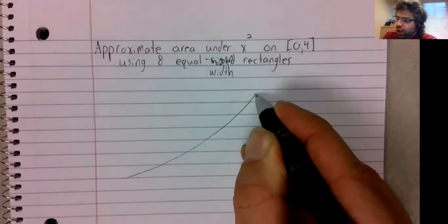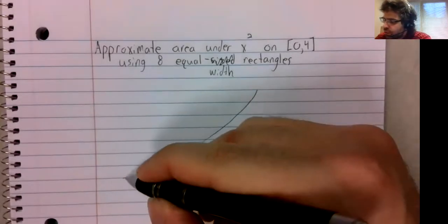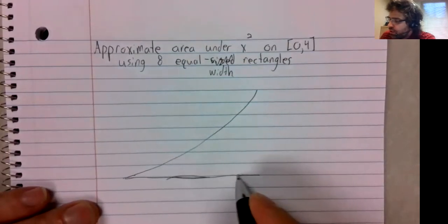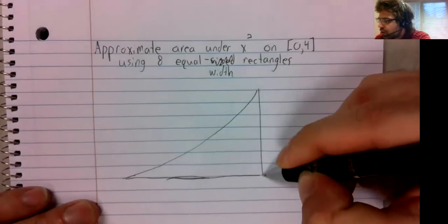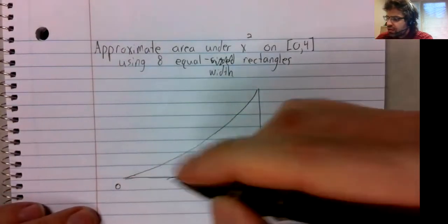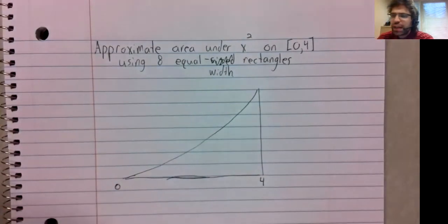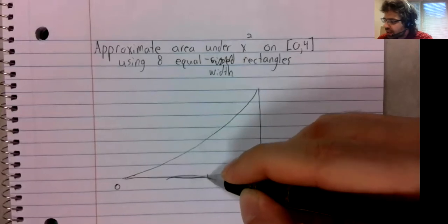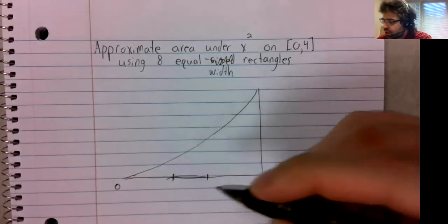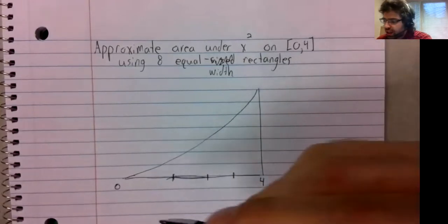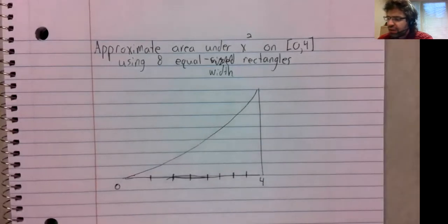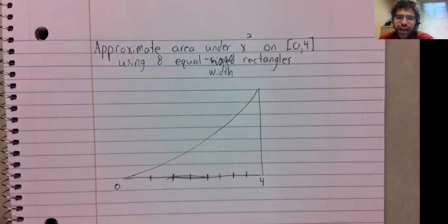So not drawing this even remotely to scale. But here's our curve. We start at zero, we end at four. If our partition is going to have eight equal width rectangles, those rectangles must each have a width of one half.